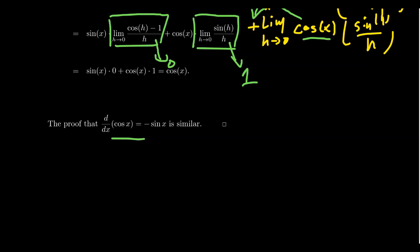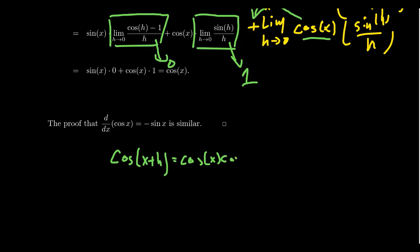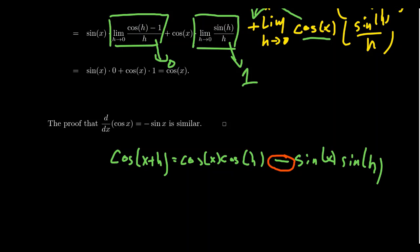Similarly, we can use the same type of argument to show that the derivative of cosine of x is equal to negative sine of x. The main difference in the argument comes from the angle sum identity for cosine: cosine of x plus h equals cosine of x times cosine of h minus sine of x times sine of h. If you make that one modification and go through the same simplification steps, everything proceeds the same way — but because there is a negative inside the identity instead of a plus, that produces a negative sign at the very end. So the derivative of cosine of x is negative sine of x, not positive.